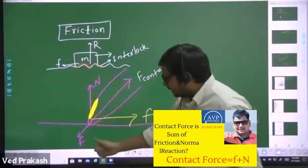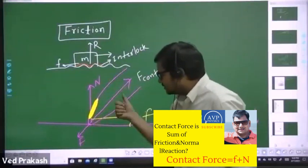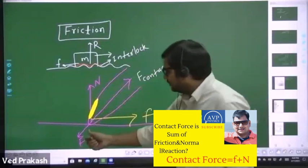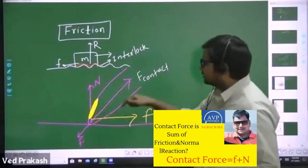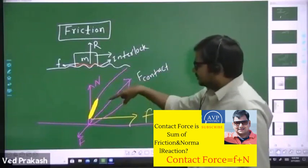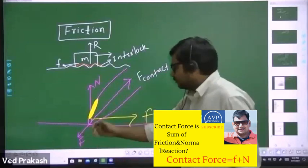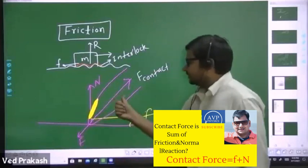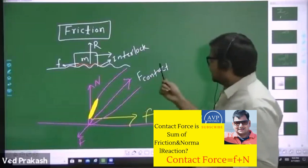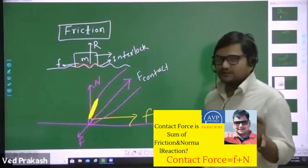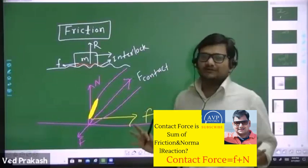When you apply force on the ground, the ground will react to your force and exert a force back on your finger. Suppose this is a finger and from your finger you are applying force on the ground — so the ground will also exert a reaction force on you. That reaction force is named as contact force, and friction is a part of that contact force.